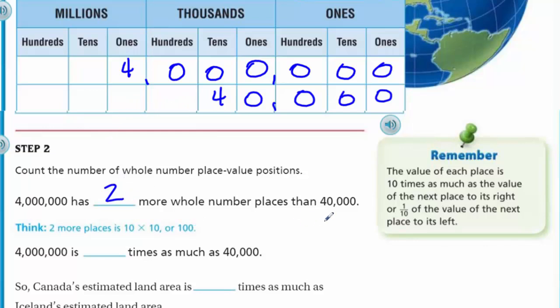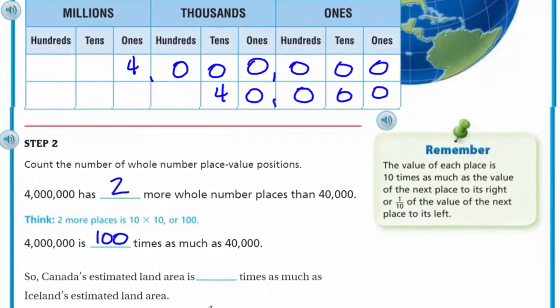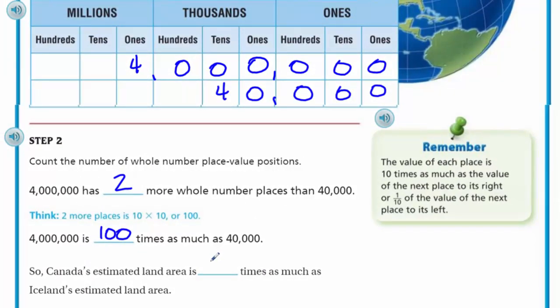That's step two. Count the number of whole number place value positions. Like 4 million has blank more whole number places than 40,000. And to me, I would say there's two because we don't have any in the 100,000 place nor the millions. So we'd have two more whole number places than 40,000. Think, two more places is 10 times 10 or 100. So 4 million then is 100 times as much as 40,000. So Canada's estimated land area is 100 times as much as Iceland's estimated land area.